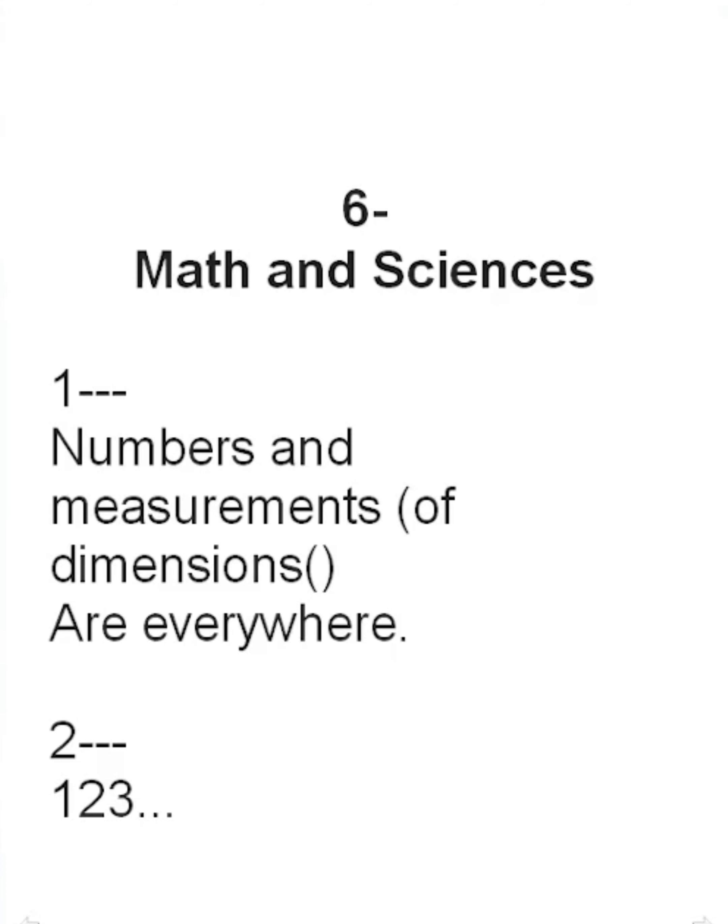Hello everybody, my name is V. Narendra Kumar and we are from NRK Academy. Today in the series of master education on the primary level — a basic holistic approach, a new holistic approach — we have math and sciences. They are very deeply linked. First thing would be numbers. Numbers are everywhere, measurements and numbers of dimensions are everywhere.